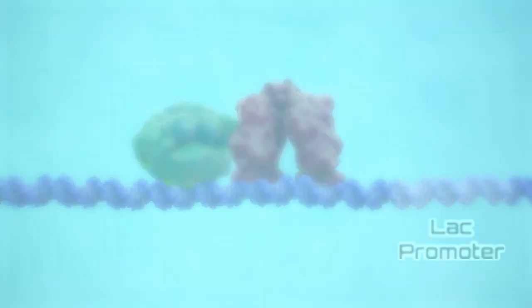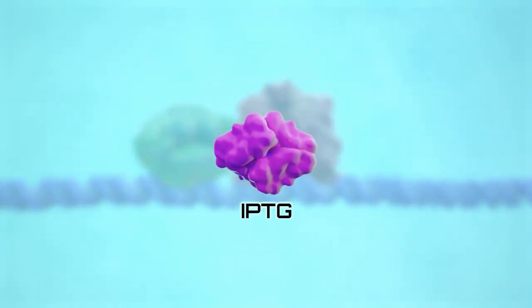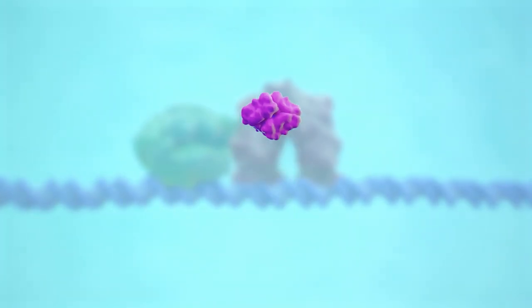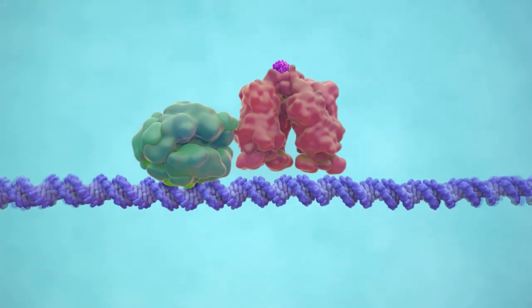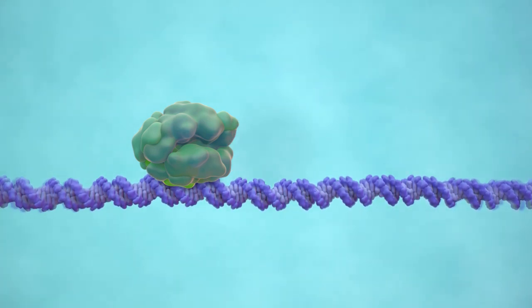At the right time, we'll add a chemical called IPTG to the media. IPTG, which is structurally similar to lactose, removes the repressor protein, which then allows the T7 RNA polymerase to do its job.